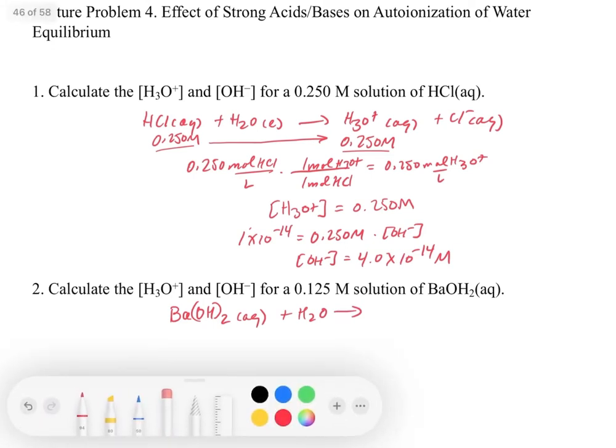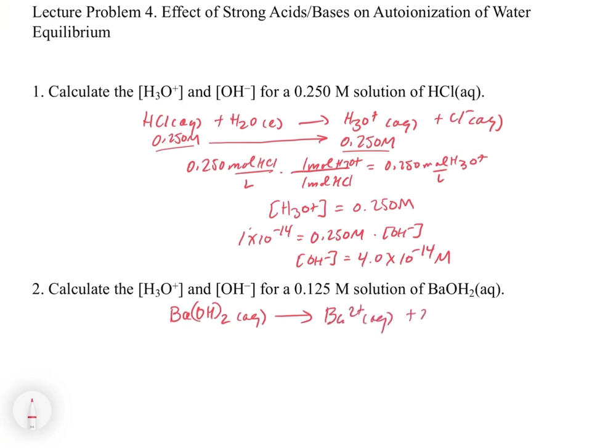But if we look at the stoichiometry, and actually in this case, we don't even have to put water here because it turns out that the barium hydroxide just ionizes directly into barium 2-plus aqueous plus 2 OH- aqueous. So we're directly, in essence, because this is a soluble hydroxide, we're directly adding OH- to the water. But what's interesting is we have 0.125 molar of the barium hydroxide. And so now we have to deal with this stoichiometry.